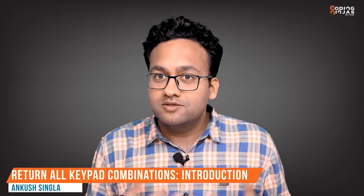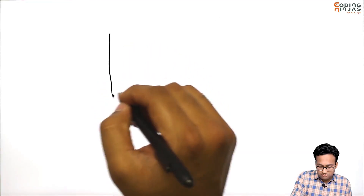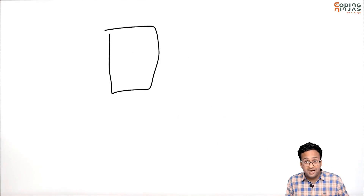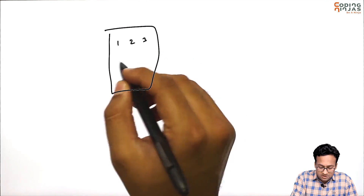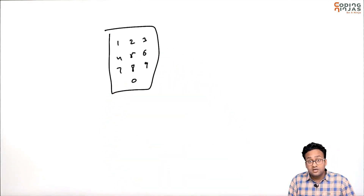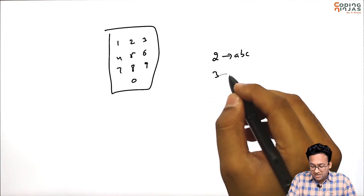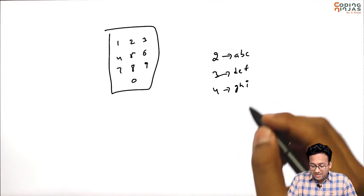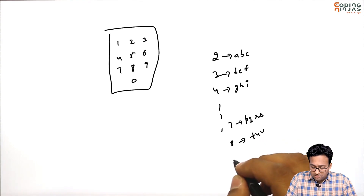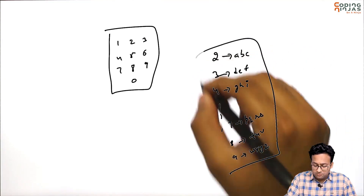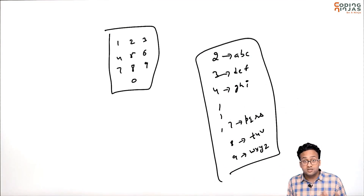In this session we will discuss a new problem — a very interesting and commonly used interview problem that I particularly like. This problem requires you to think about your phone's keypad. When you open the keypad to dial a number, each number has some characters written below it. For example, 2 has ABC, 3 has DEF, 4 has GHI, 7 has PQRS, 8 has TUV, and 9 has WXYZ.